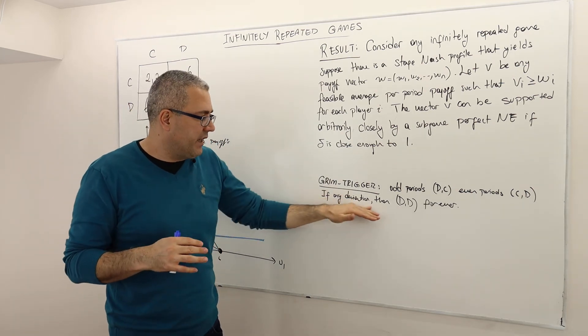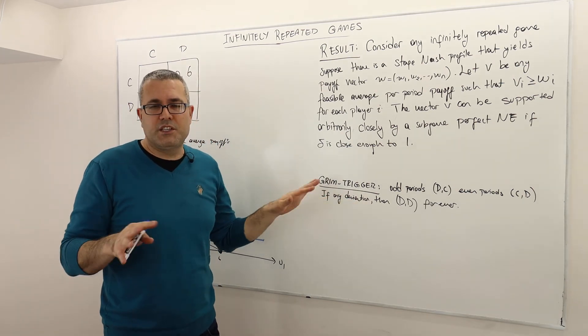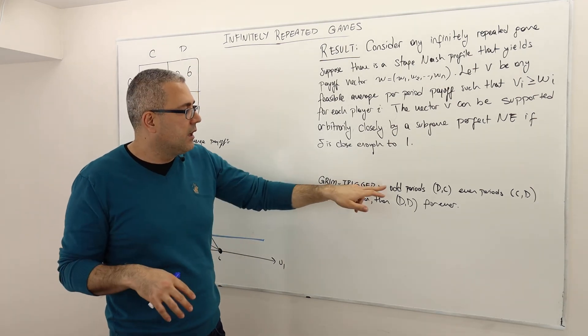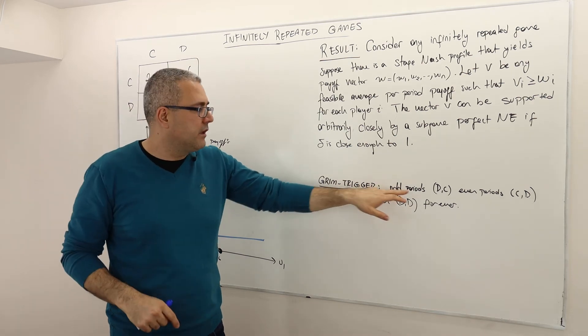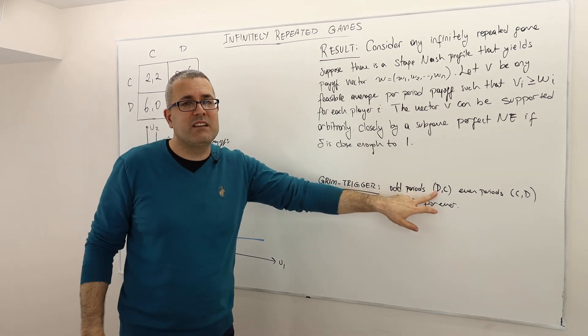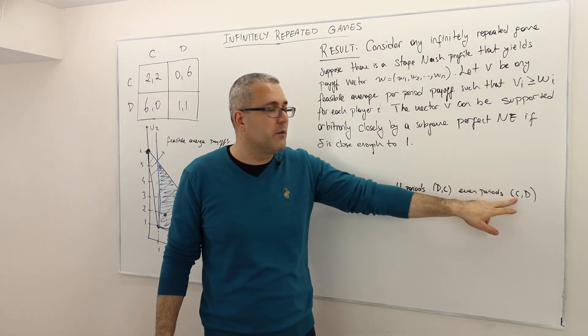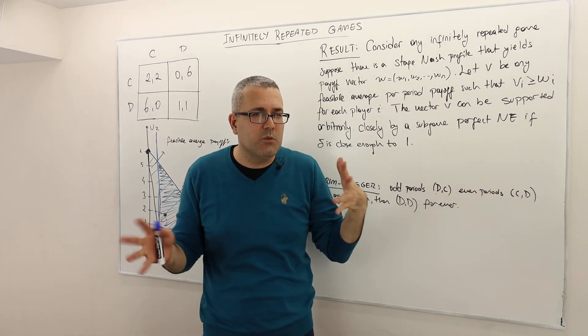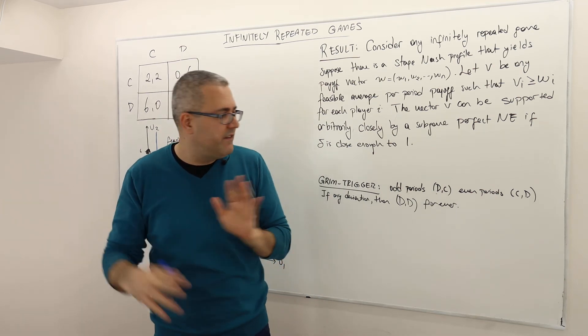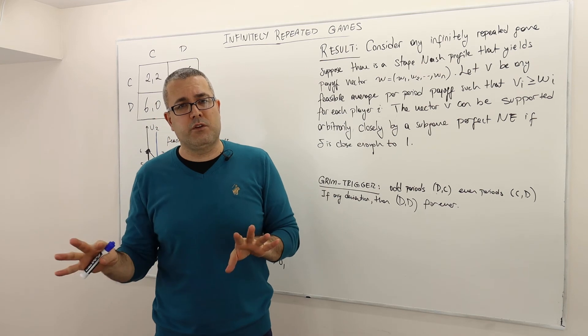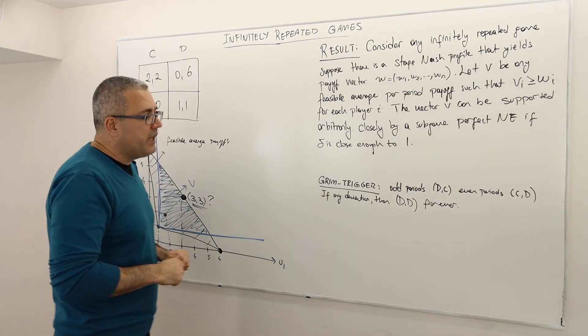If anybody deviates, if any deviation - I cheated and just said any deviation - what does that mean? That means, for example, it was an odd period but player 1 played C rather than D, alright? Or it was an even period, player 1 played D rather than C. You see what I mean? So if there's any deviation, well then these players are going to play DD for the rest of the game, alright?